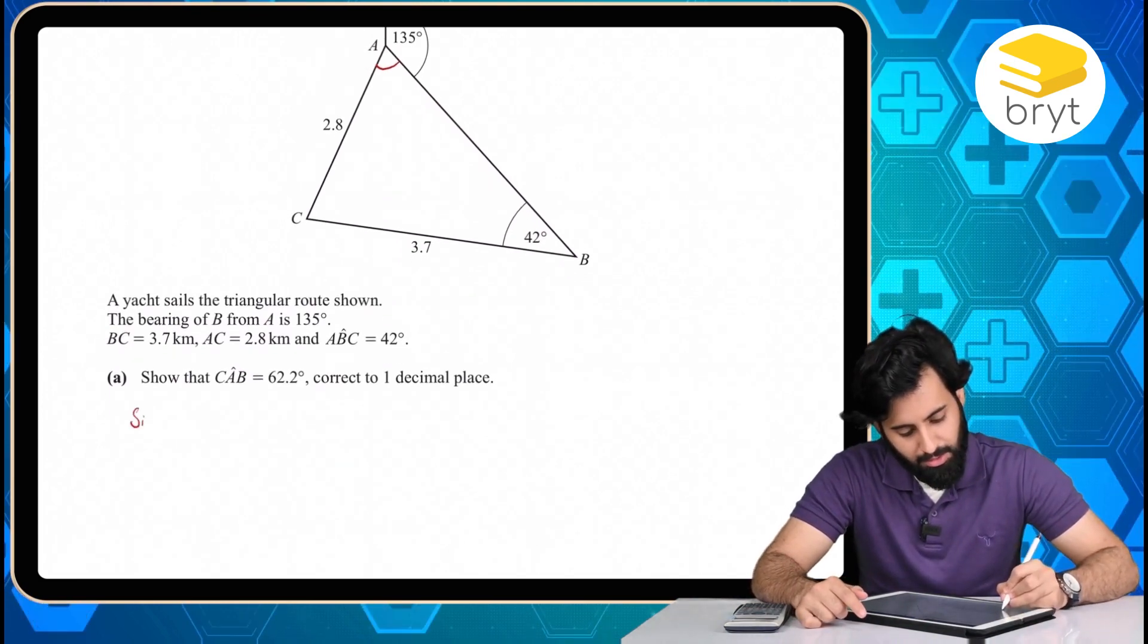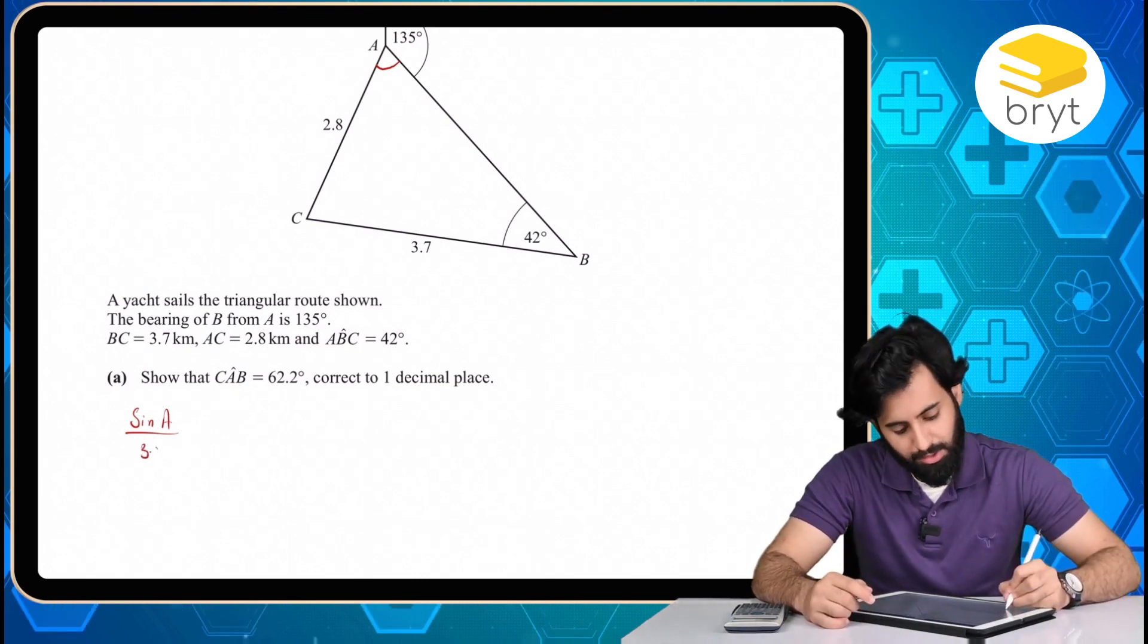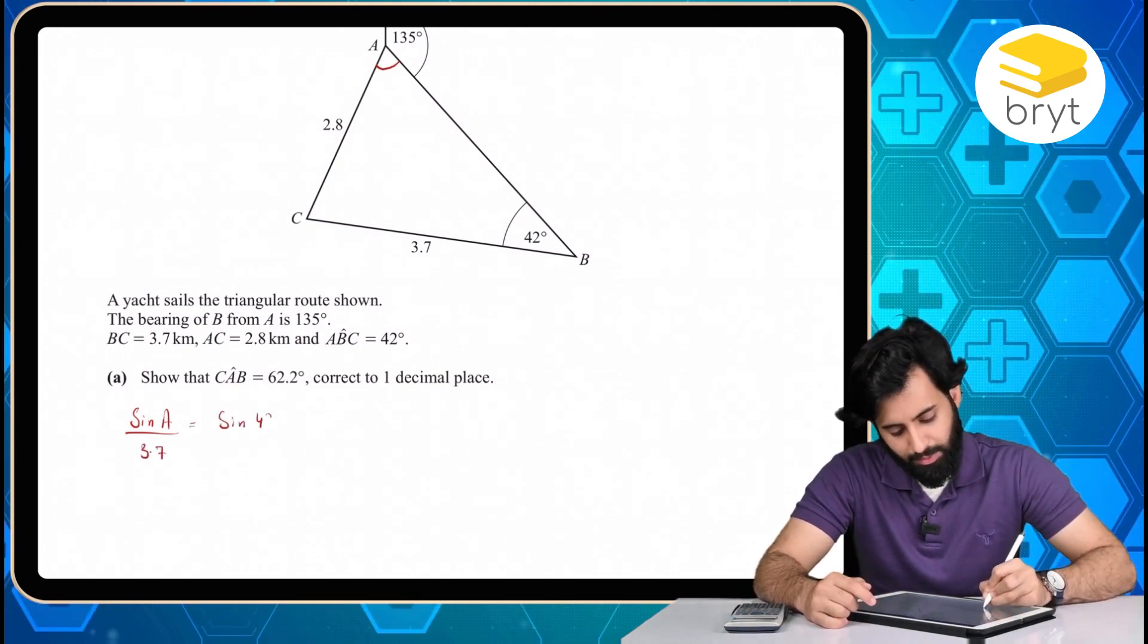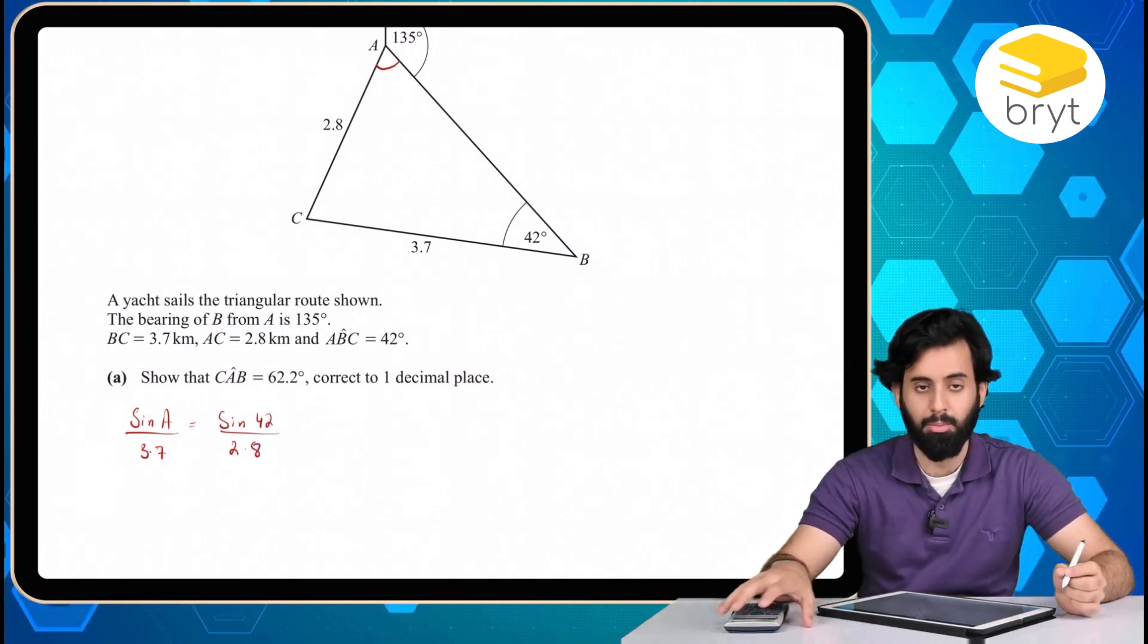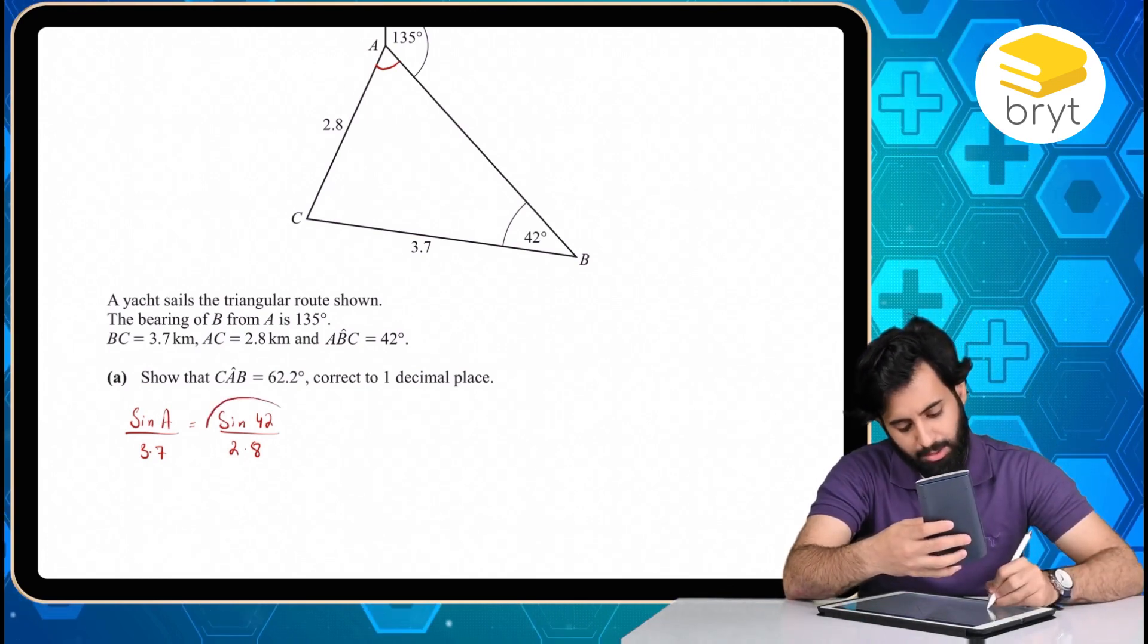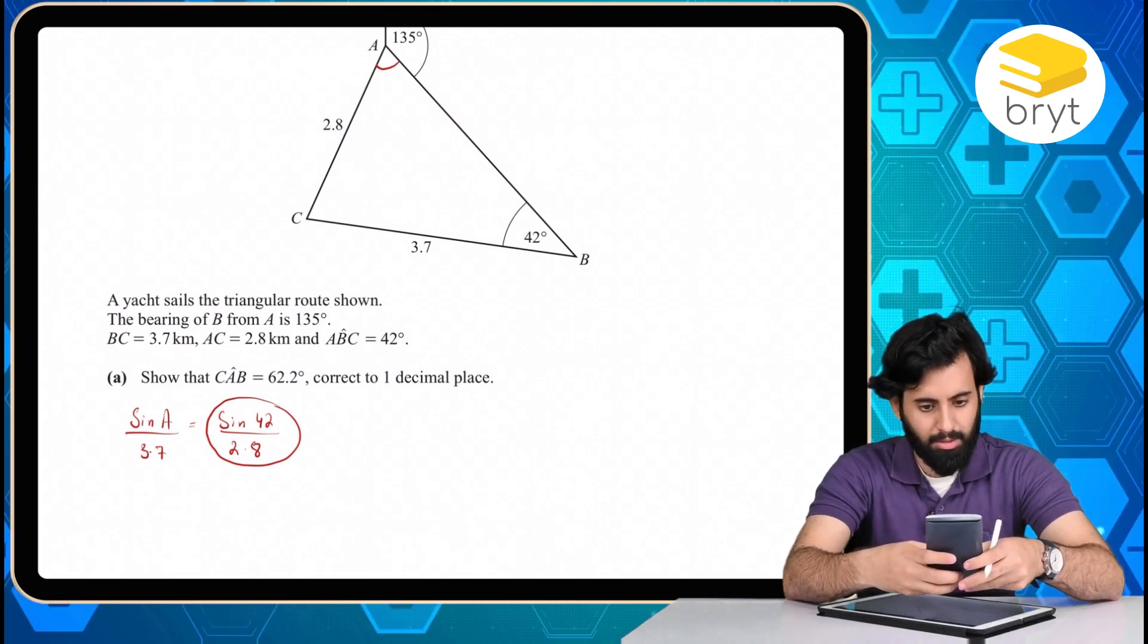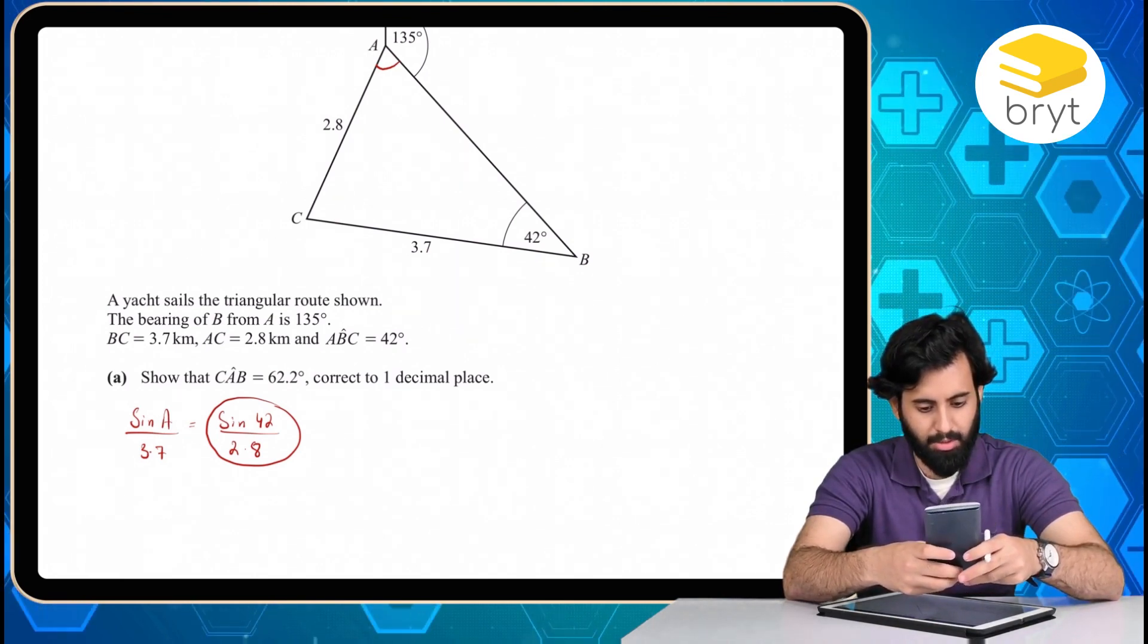So here's how we'll start. We'll say sine A divided by the length opposite of it, which is 3.7, is equal to sine 42 over the length opposite of it, which is 2.8. So let's work this out in our calculator. So first I'm going to evaluate this part, which is sine 42, divide by 2.8. And then I'm going to multiply this by 3.7.